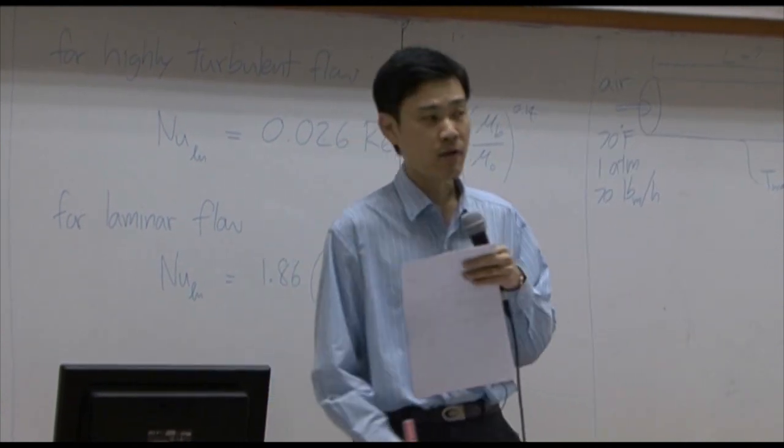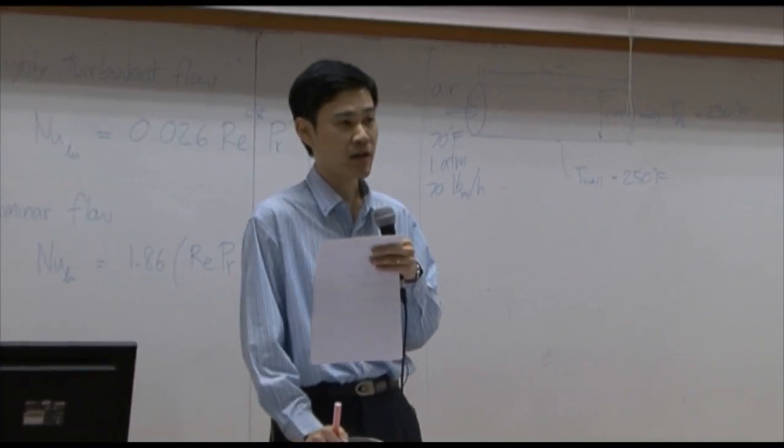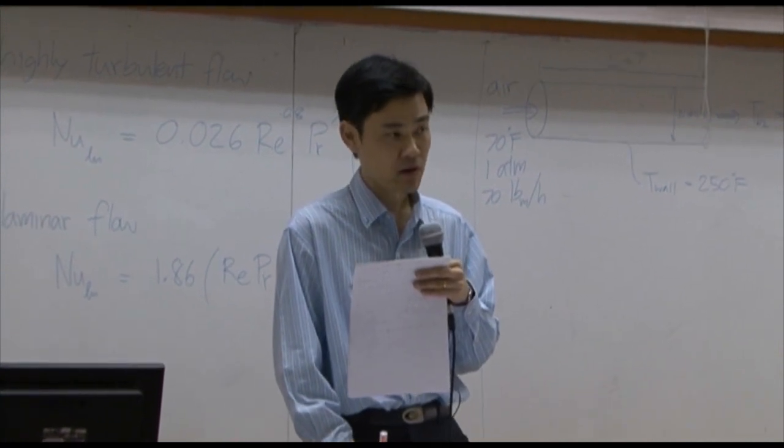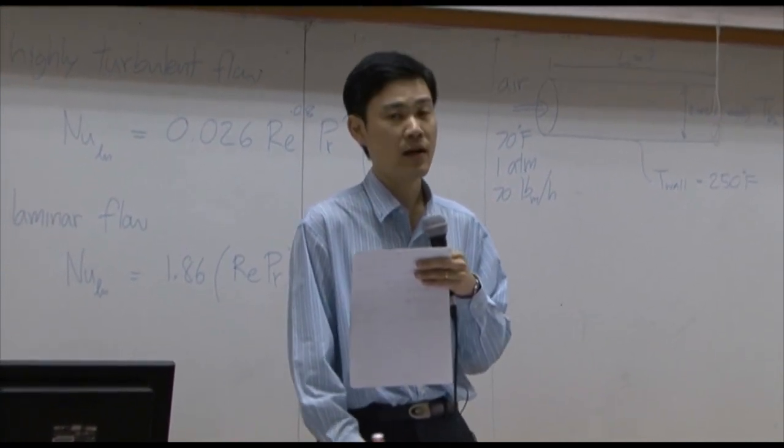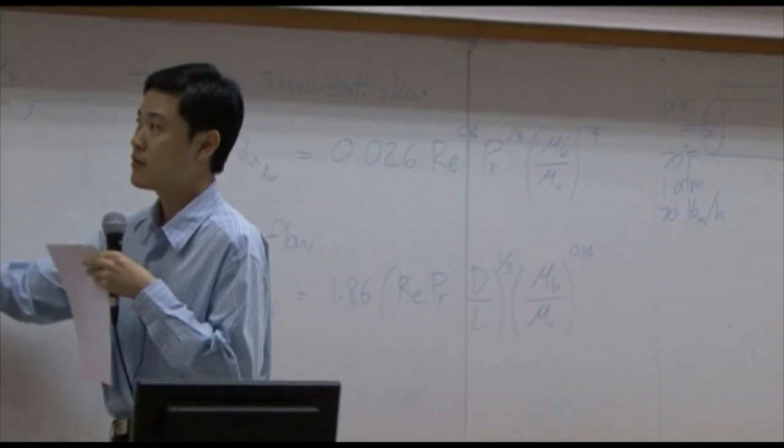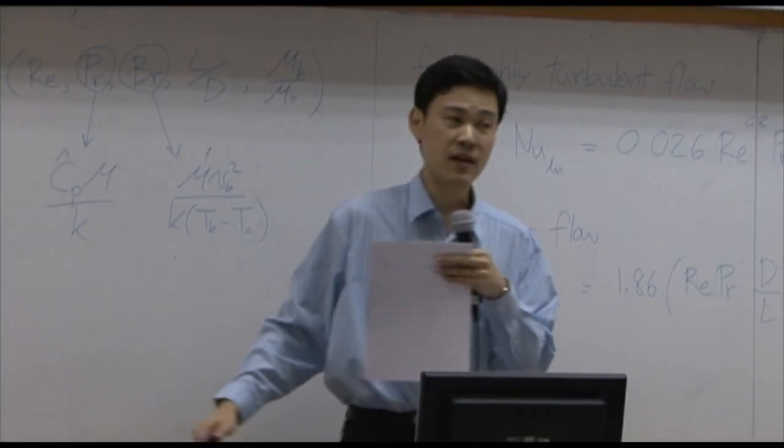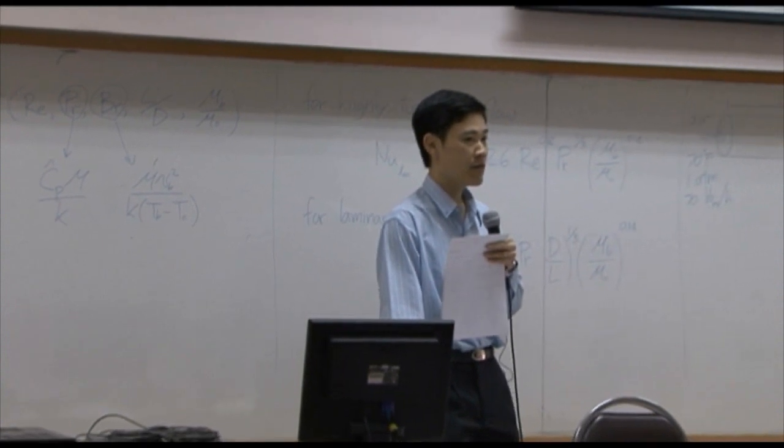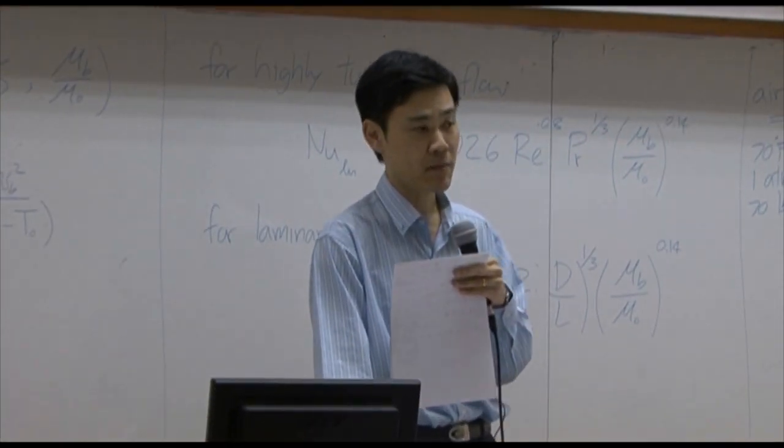Normally, heat transfer coefficient would be represented in terms of a dimensionless number called Nusselt number. From last class, we learned that we have three or four kinds of Nusselt number.